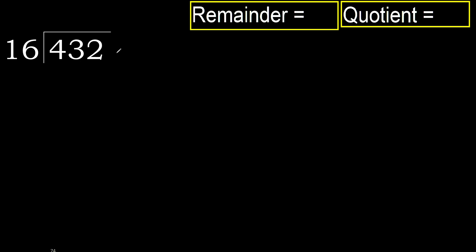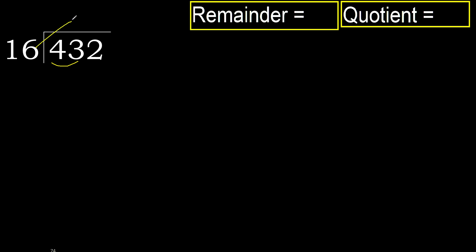432 divided by 16. 4 is less, therefore next. 43 is not less, therefore with 43. 16 multiply by which number is nearest to 43 but not greater.